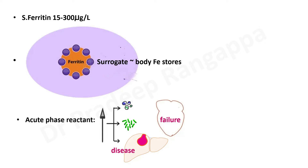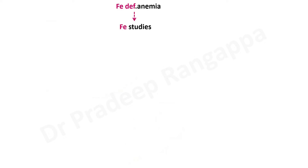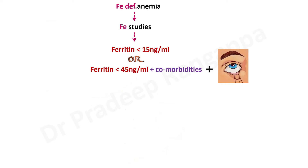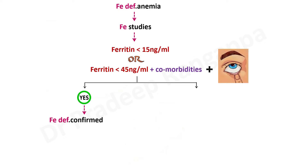So we have looked at total iron, total iron binding capacity, transferrin saturation, and serum ferritin, and their role in interpreting iron deficiency. We need an algorithmic approach when interpreting iron studies. The simple algorithm is: if you suspect iron deficiency anemia, first look at ferritin. If ferritin is less than 15 nanograms per mL, or less than 45 nanograms per mL in patients with comorbidities or signs of anemia, then iron deficiency is confirmed.